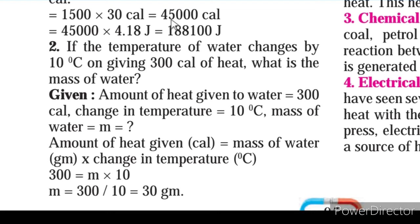We know that one calorie is equal to 4.18 Joule. Therefore, 45,000 calories is equal to 45,000 into 4.18 Joule, which equals 188,100 Joule.